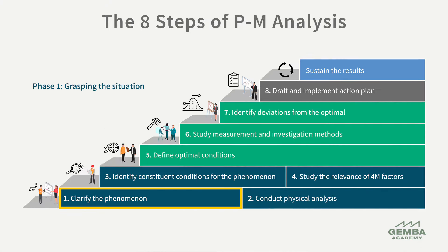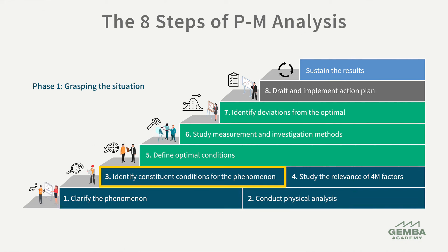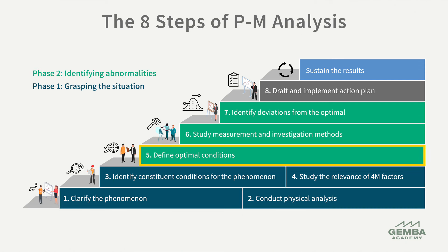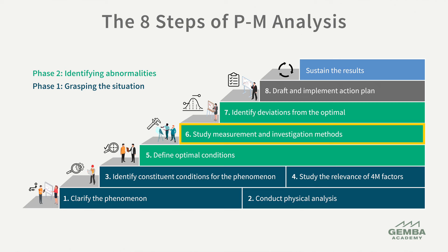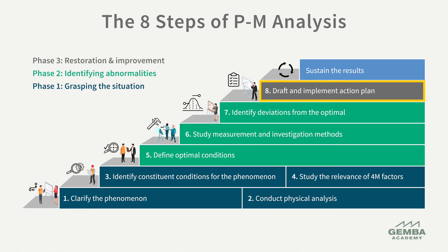Now that we've compared P-M analysis and 5Y analysis, let's review the proven eight steps for conducting a P-M analysis. These steps are to clarify the phenomenon, conduct a physical analysis, identify constituent conditions, study the 4M inputs, and define optimal conditions for each factor. Then we study the measurement and investigation methods, measure and identify abnormalities and deviations from the optimal, draft and implement an improvement plan, and set up controls to monitor and sustain the results.